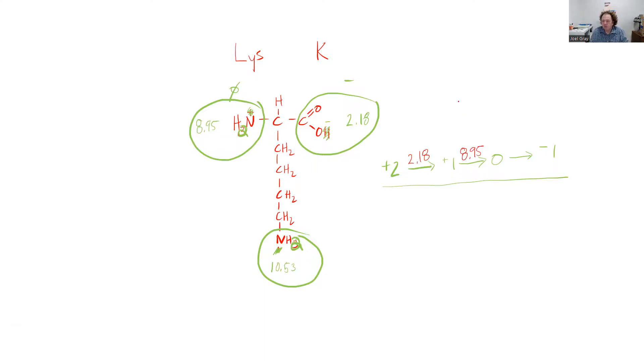Because if my pH is equal to 8.95, then 50% of my molecule has a +1 charge, 50% of my molecule has a 0 charge.